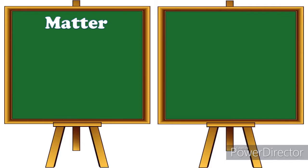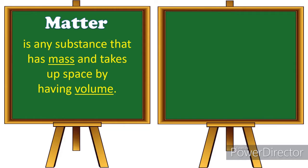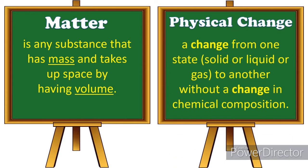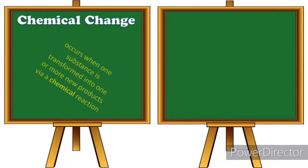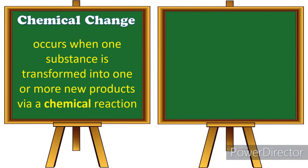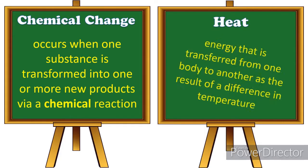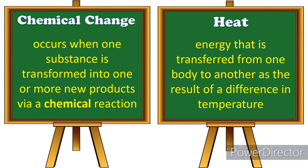First is matter — it is any substance that has mass and takes up space by having volume. Physical change is a change from one state — solid, liquid, or gas — to another without a change in chemical composition. Chemical change occurs when one substance is transformed into one or more new products via a chemical reaction. Heat is energy that is transferred from one body to another as the result of a difference in temperature.